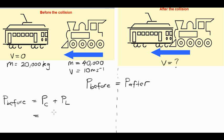Of the carriage, momentum is mass times velocity. We've got a 20,000 kilogram mass, but the velocity is zero. So 20,000 times zero is just going to give us zero kilograms meters per second beforehand.